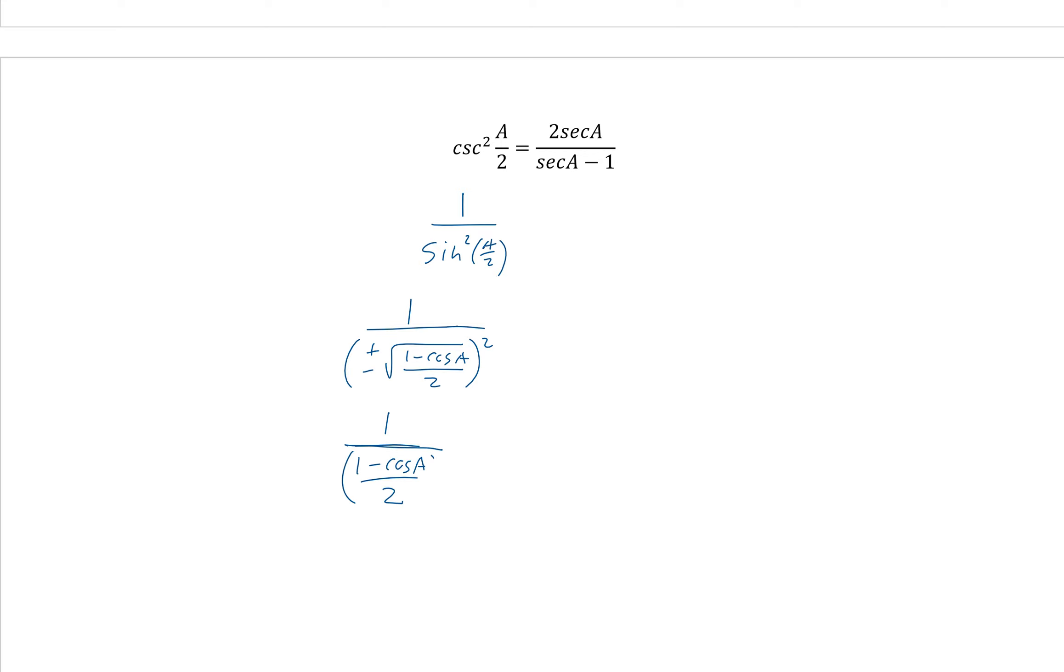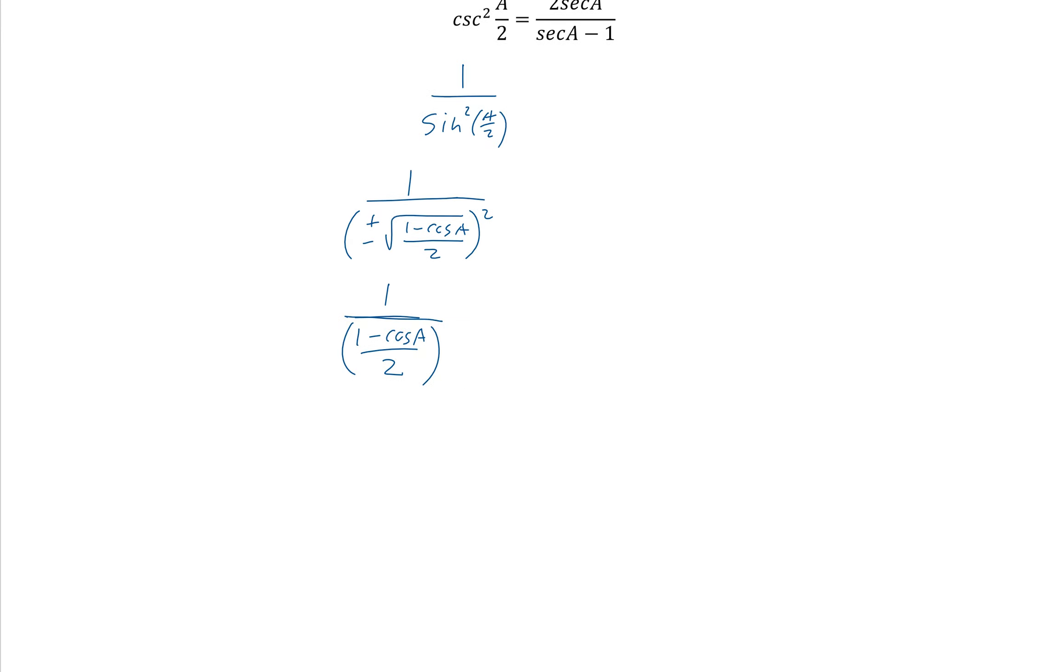So that square cancels, and we end up with 1 over 1 minus cosine a over 2. And again, this is just a denominator. So reciprocal would be, remember this is 1 divided by this. And when you divide, you reciprocal it. So that is this.